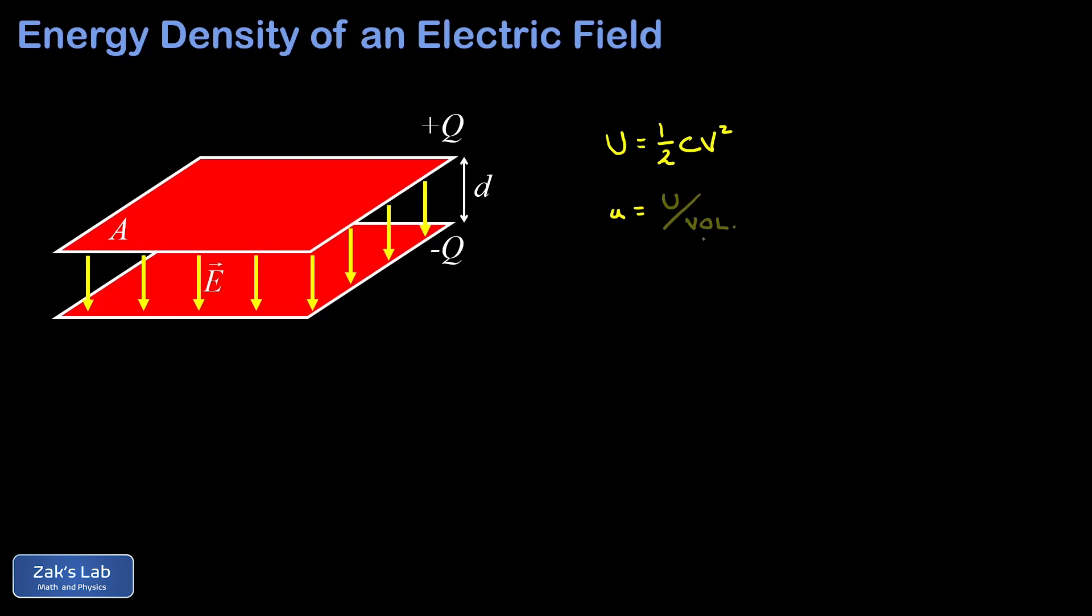The volume of that region where we have electric field between the plates of a capacitor is just given by the area of the plates multiplied by the plate separation distance little d.